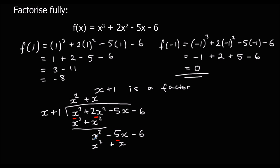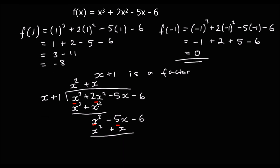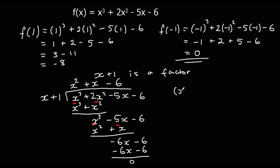Subtract again: x squared minus x squared is 0. Negative 5x minus another x is minus 6x. Bring down the next term, minus 6. Then minus 6x divided by x is minus 6. Multiply: minus 6x and minus 6. That subtracts to give zero — no remainder. So we have two brackets: x plus 1, and x squared plus x minus 6.